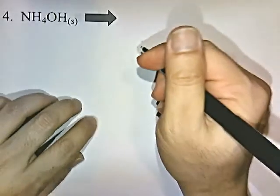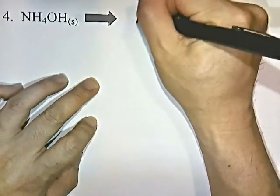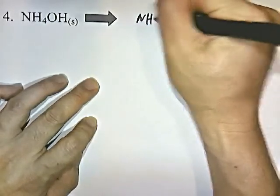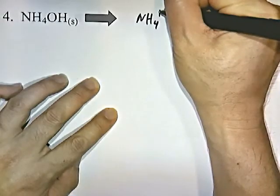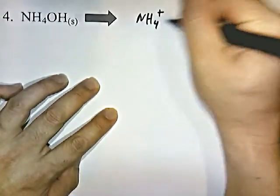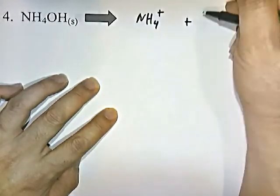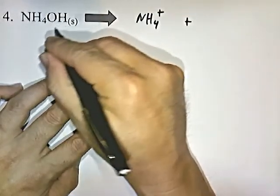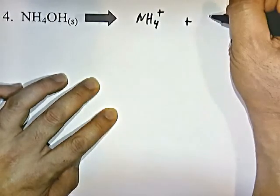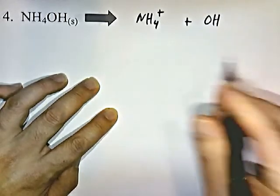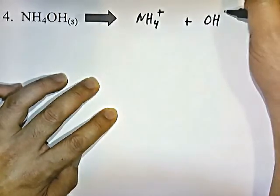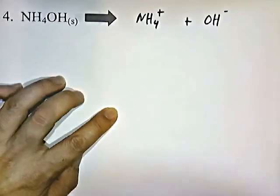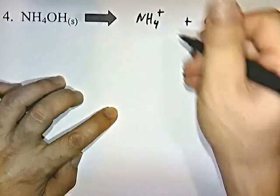NH4OH: how does that dissociate when you put it in water? NH4 is a polyatomic you should have memorized by now. OH is another polyatomic — you should have memorized that hydroxide OH has a negative 1 charge. And that's the answer.